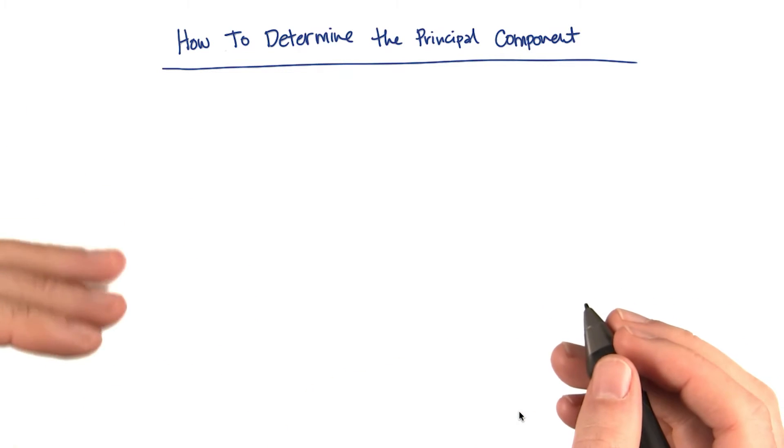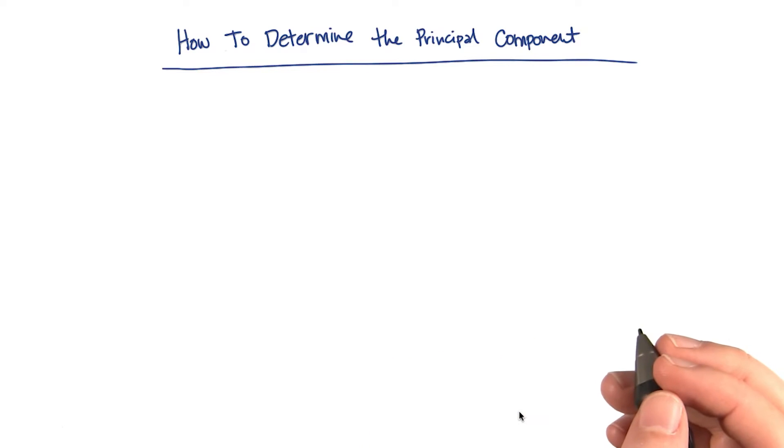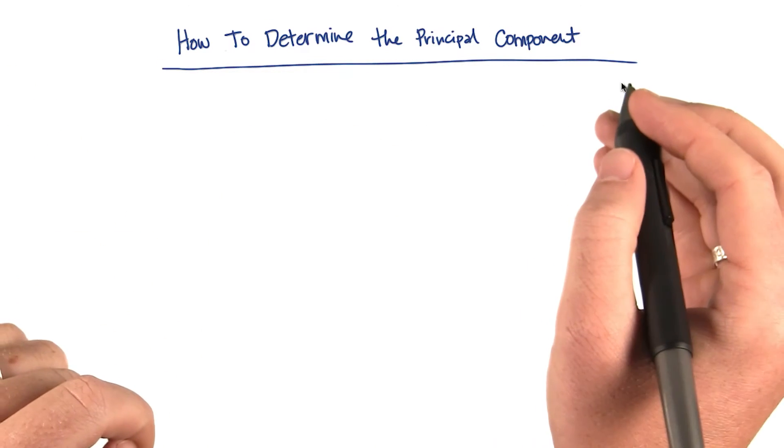And I asked you to just take it on faith for a moment that the principal component existed and it was where I said it was. Now I'm going to use the neighborhood example to show you how to determine the principal component.